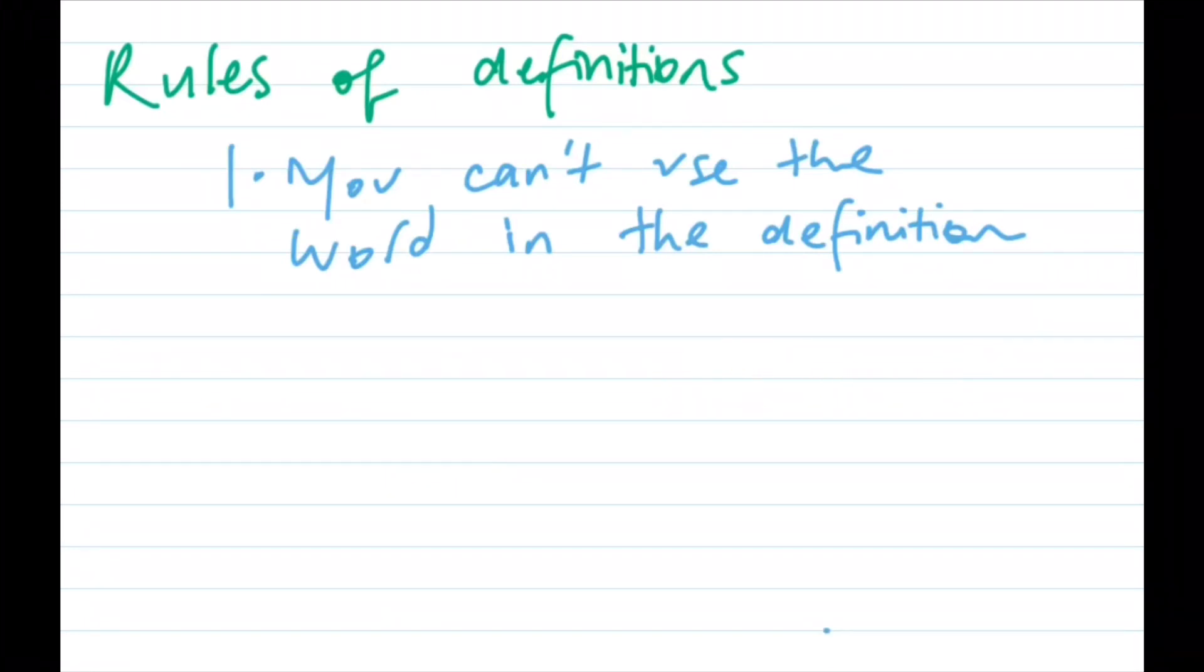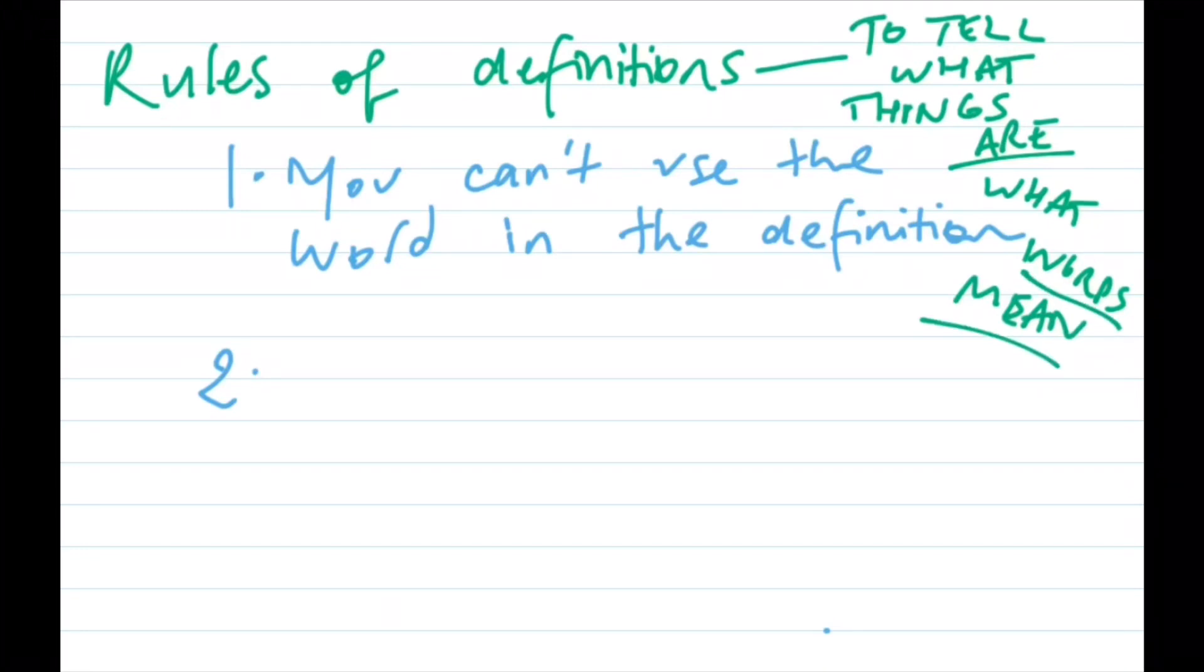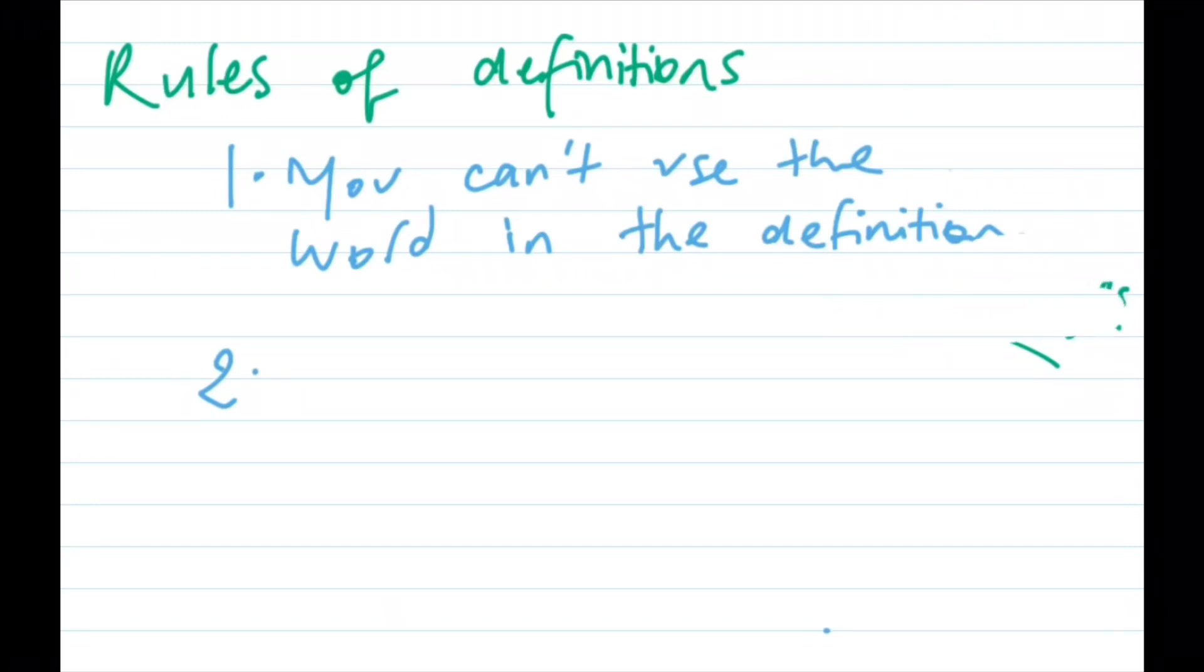It's also important to keep in mind what definitions are for. Definitions, firstly, tell us what things are. And more specifically, they're telling us what words mean. And even though it's a weird way to think about it, they're kind of telling you how your word and your thing are different from all the other words and things. So really, a good definition should try to exclude everything that isn't the thing being defined.